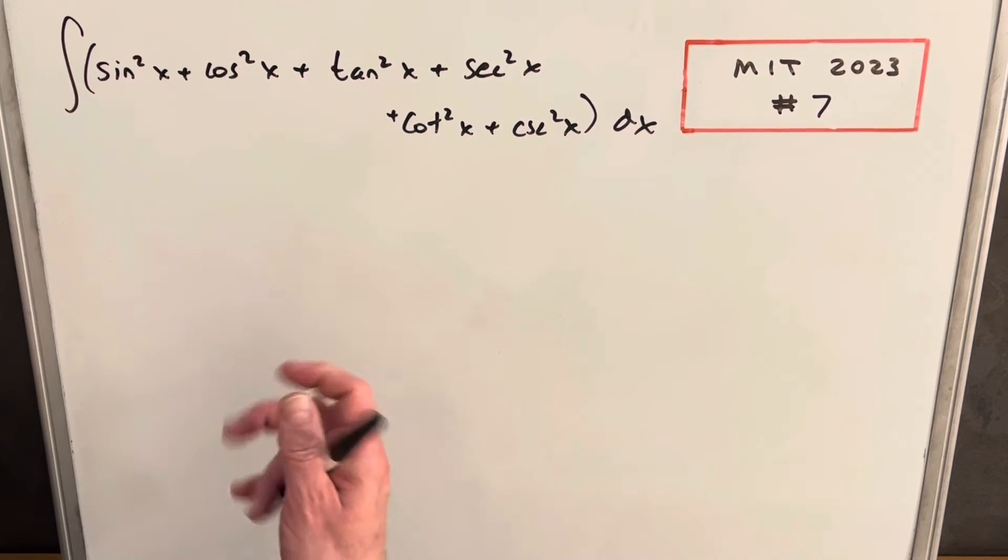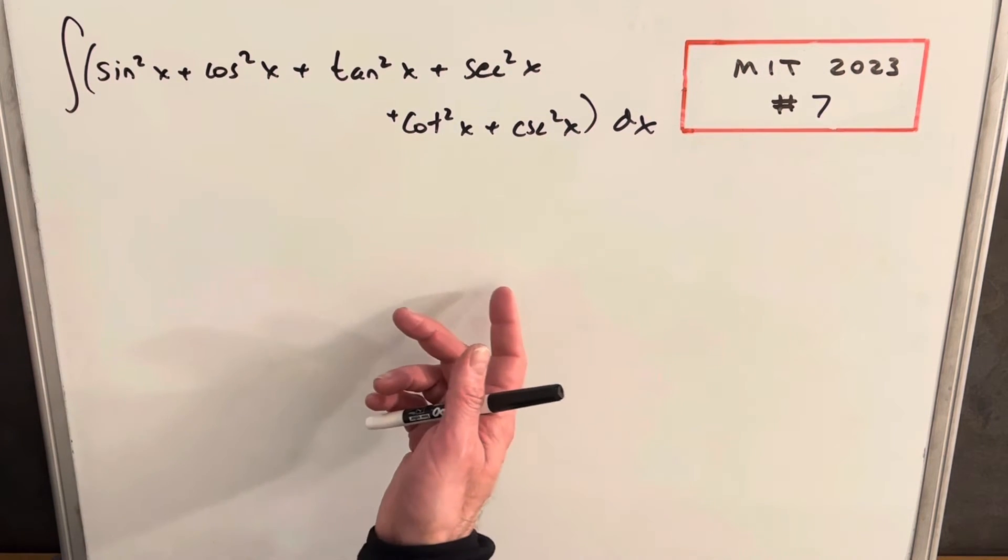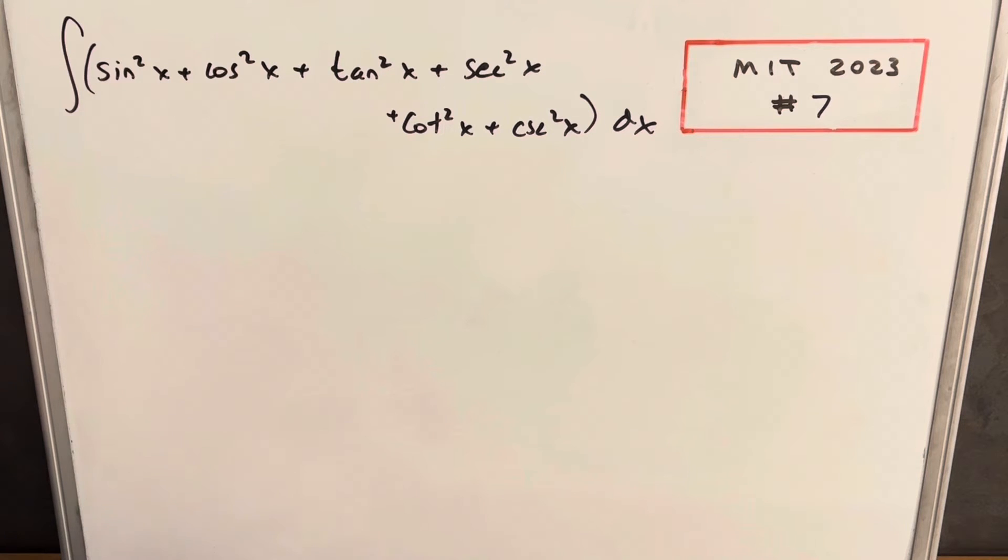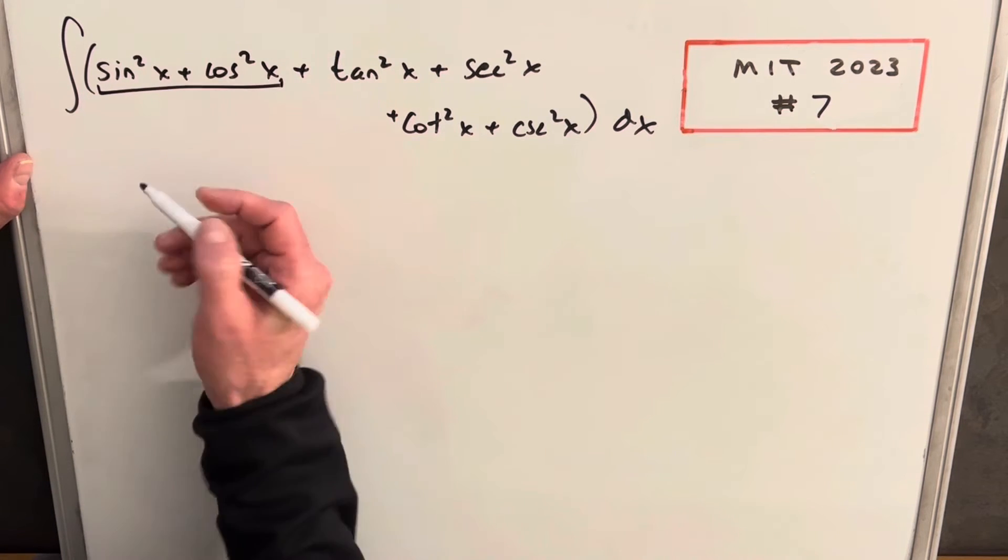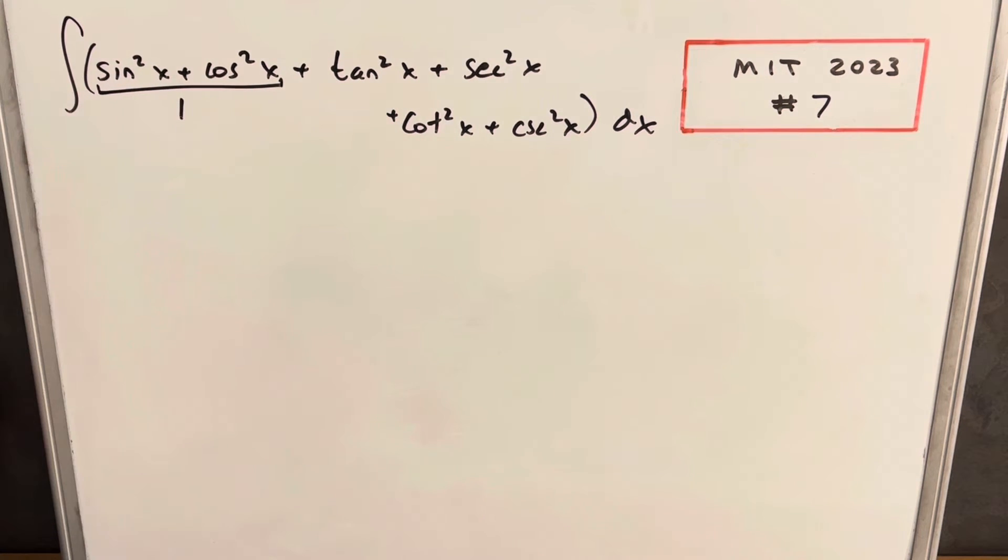Now obviously you could just go ahead and integrate. You could do six different integrals and it would be fine. But let's see if we can get a little bit of simplification here. So the first thing I noticed, which is going to be real nice, is sine squared plus cosine squared is 1. And I think we can use a couple identities for tan and cotangent.